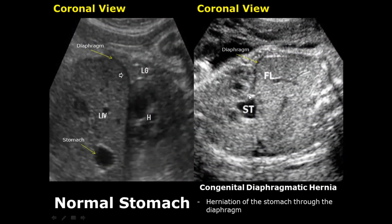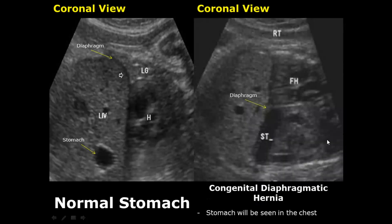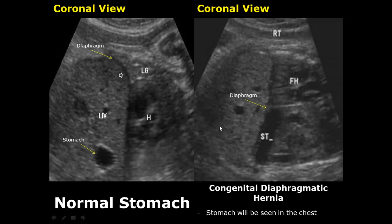In congenital diaphragmatic hernia, there is a defect in the diaphragm which allows abdominal organs to protrude through the defect and enter the chest cavity. Mostly the stomach is seen protruding through this defect. In this coronal view, the stomach is herniating through the diaphragmatic defect. In this image we can see the stomach in the thoracic cavity, with the heart displaced towards the right side because of the herniation. The stomach is no longer seen in the abdomen. Seeing the stomach in the thorax is a strong sign of congenital diaphragmatic herniation.